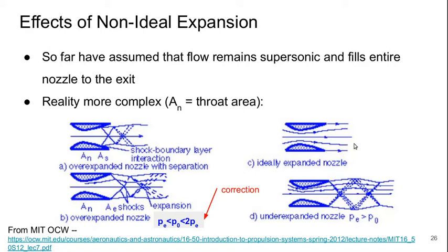In case B, C, and D, the flow does fill the entire nozzle, though only in case C do we have the perfect isentropic flow.